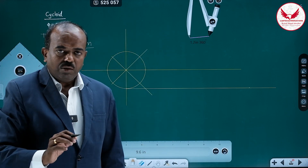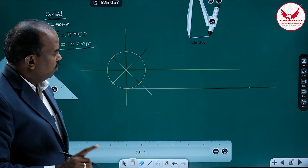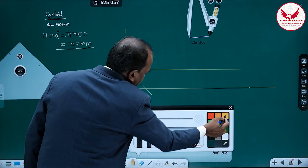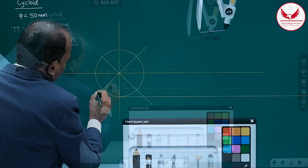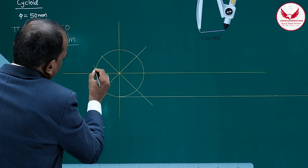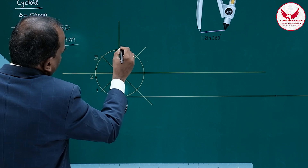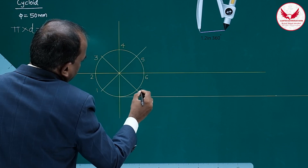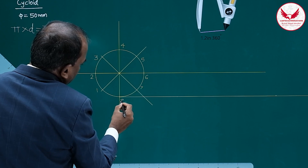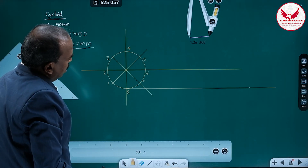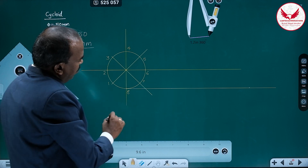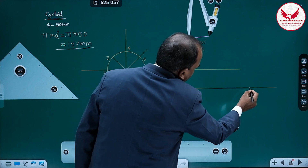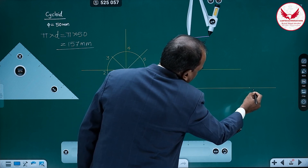We have divided this circle into 8 equal parts. Give the names to those points: 1, 2, 3, 4, 5, 6, 7, and 8. Similarly, we have to divide this 157 mm distance from start to end into 8 equal parts. This end point is going to be point 8.